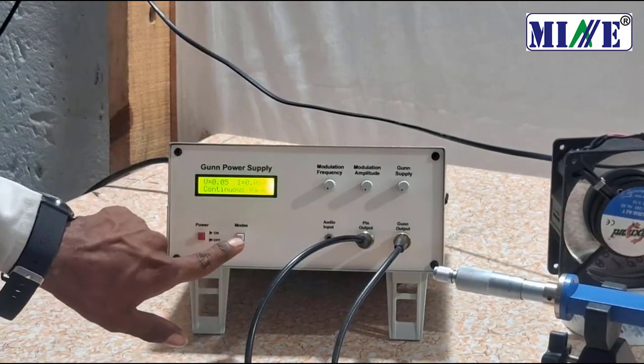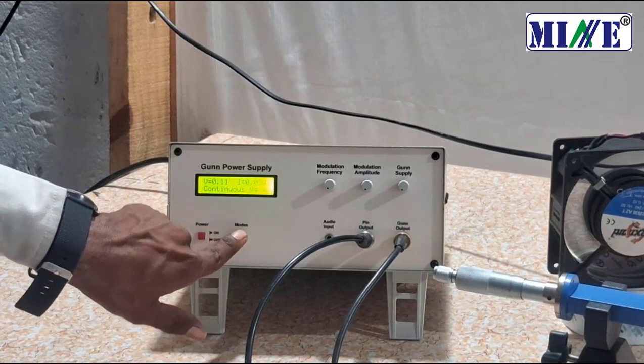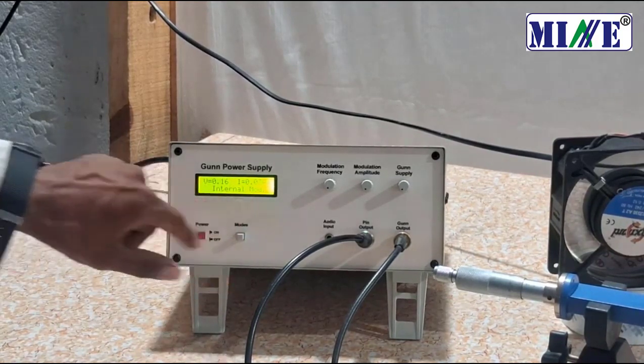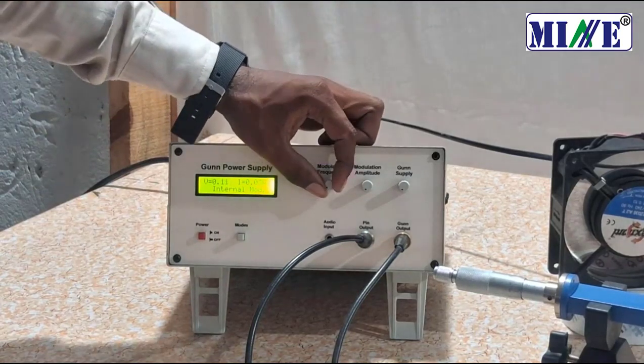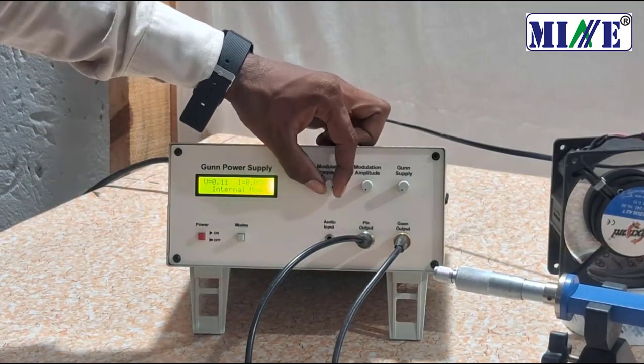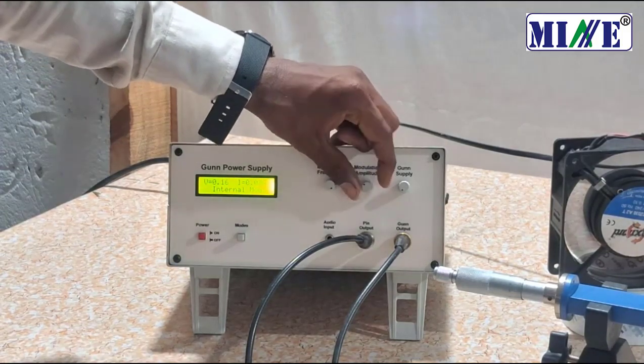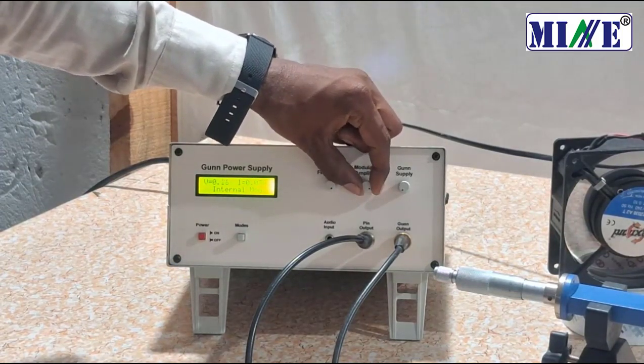Click on the mode button to change the mode. Select the internal mode. Then rotate the modulation frequency knob fully clockwise. Also rotate the modulation amplitude knob fully clockwise.